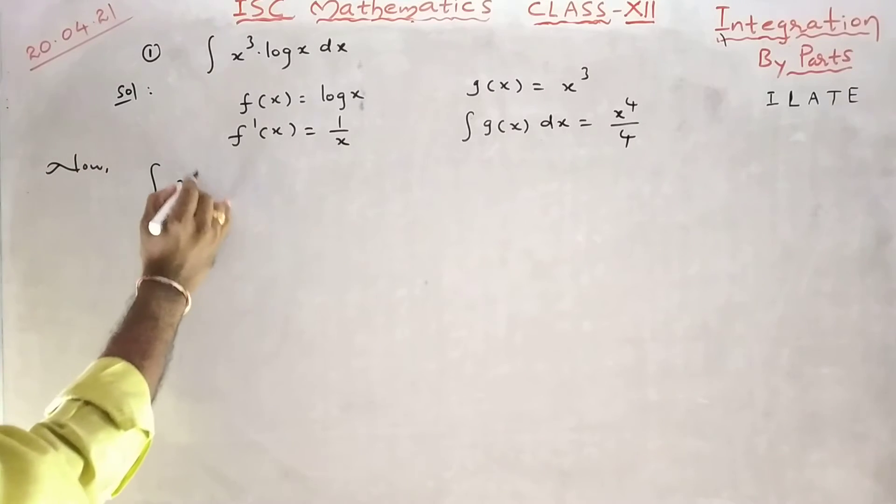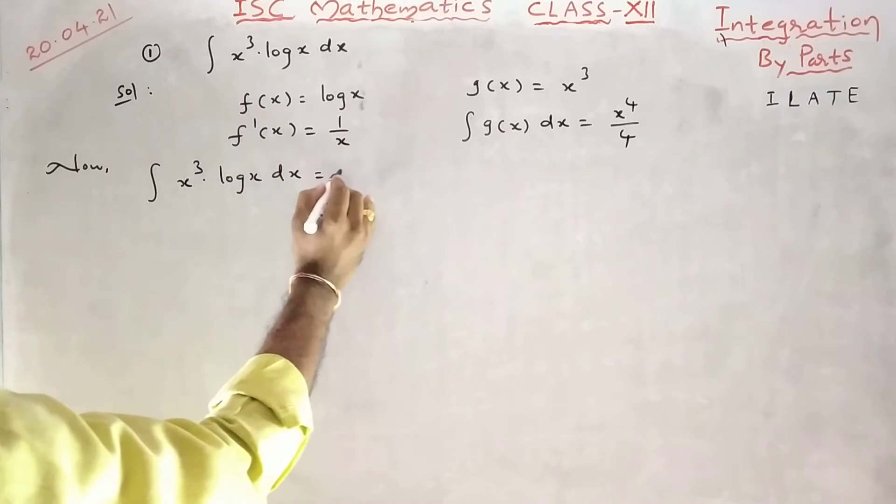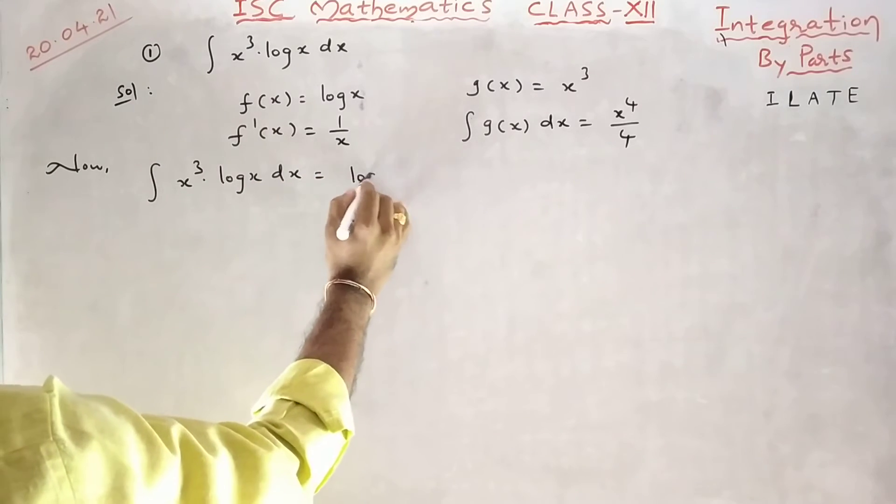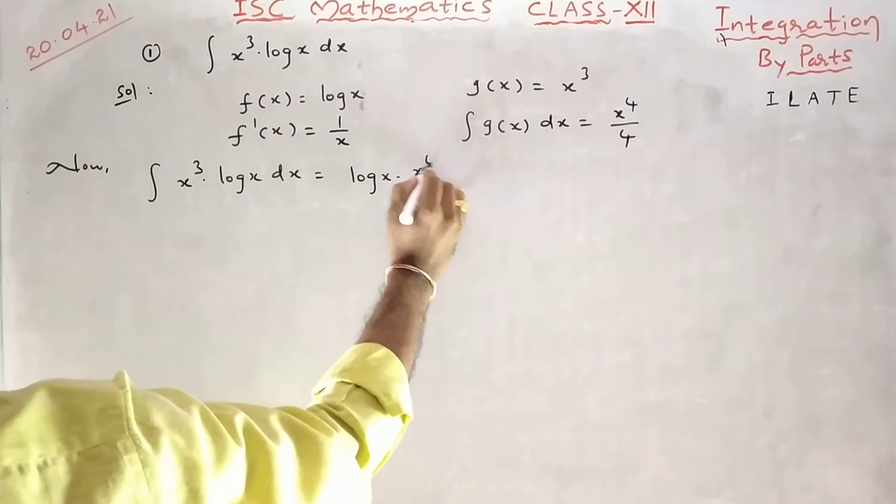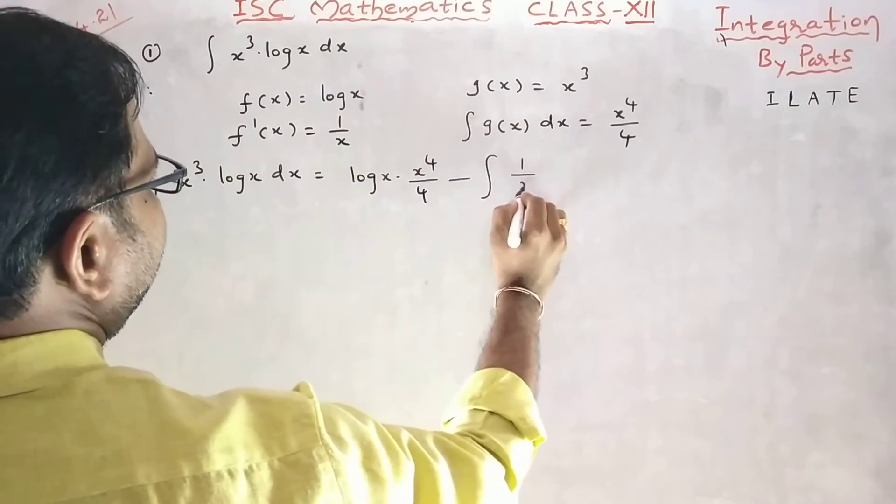Now, integral x cube log x dx equal to first function into integration of second function minus integral derivative of first function,